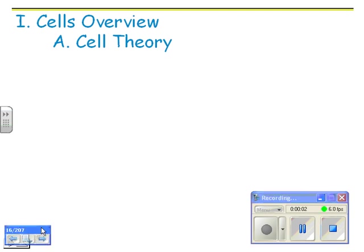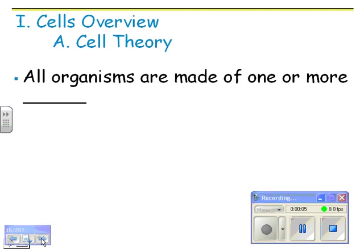Cells overview. We're going to talk about cell theory to start with. All organisms are made of one or more cells — your dog, your cat, you, your goldfish, your oak tree, the grass, the worms, the bacteria under your fingernails — all of them are made out of cells. The only wacky exception are viruses. They are not alive and they're not made out of cells, though they do have some characteristics of life.